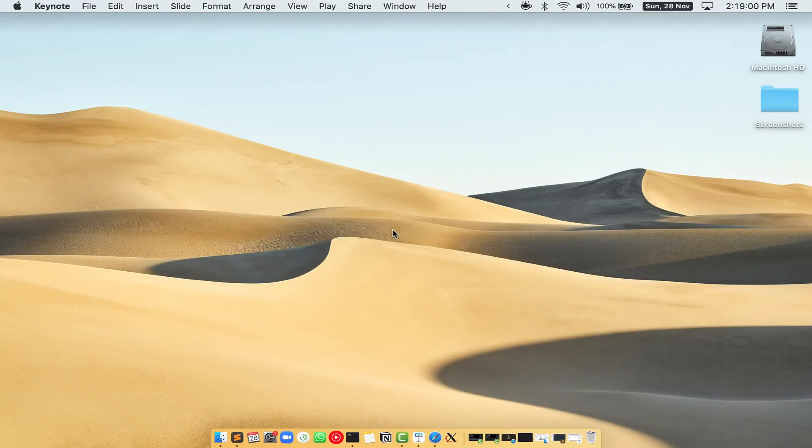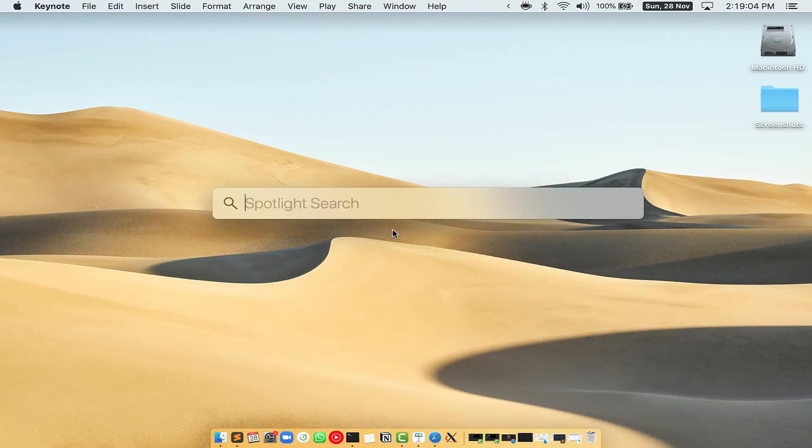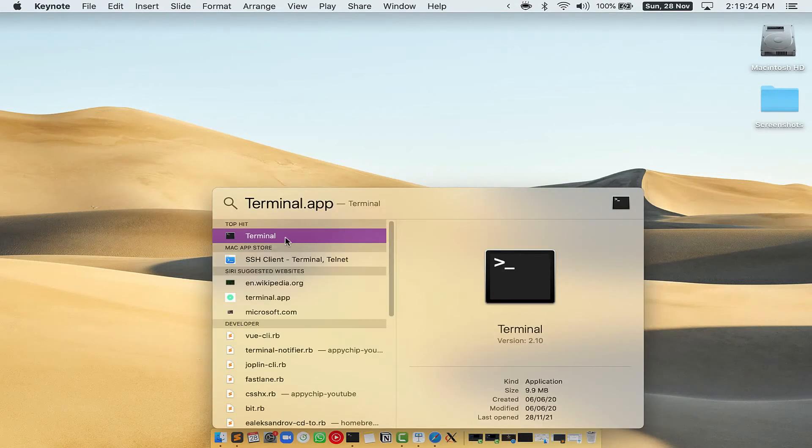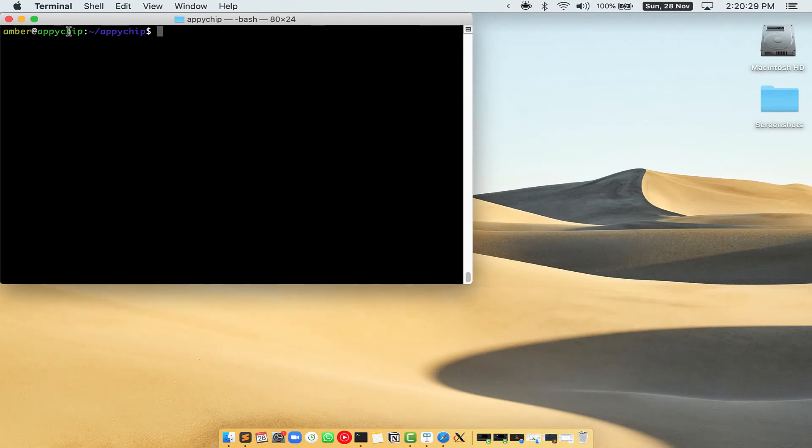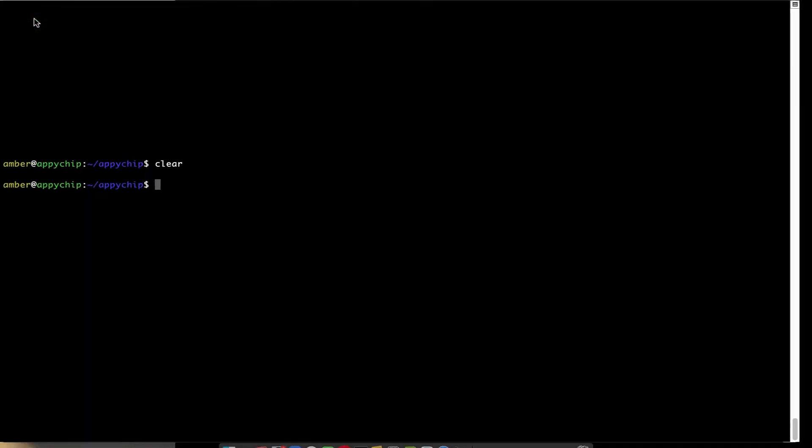First, you need to press command and space on your keyboard. This will open spotlight search on your Mac and then you have to type terminal.app. You will see this terminal app. Simply double click on it to open terminal. Let me maximize this terminal window.